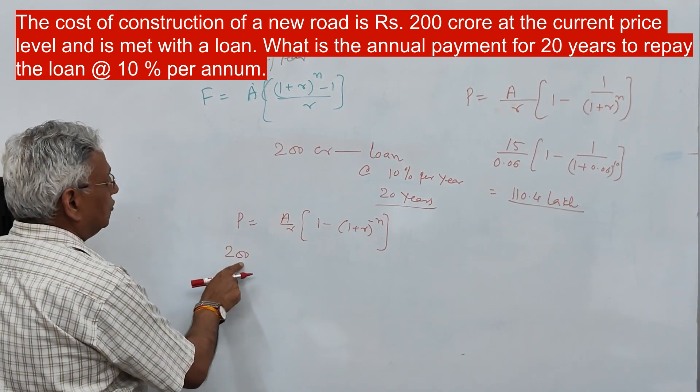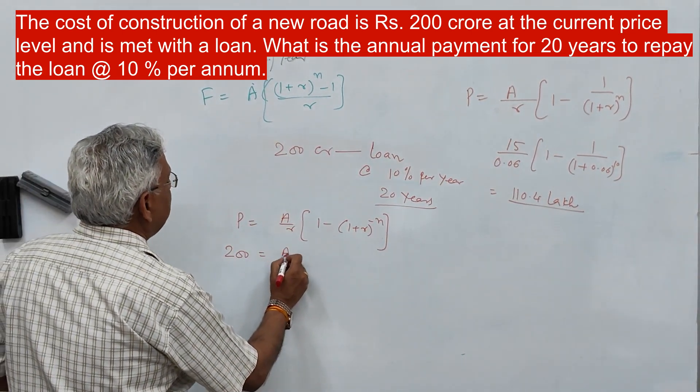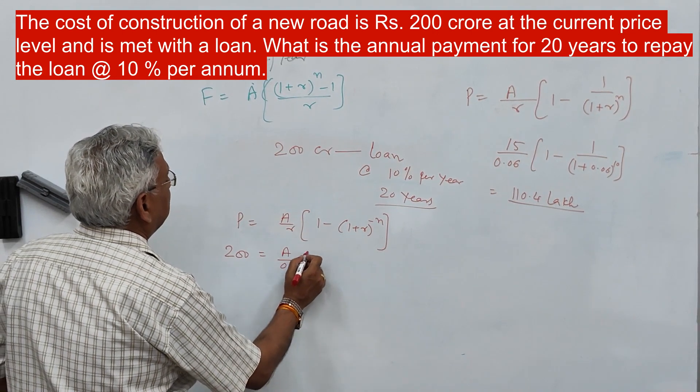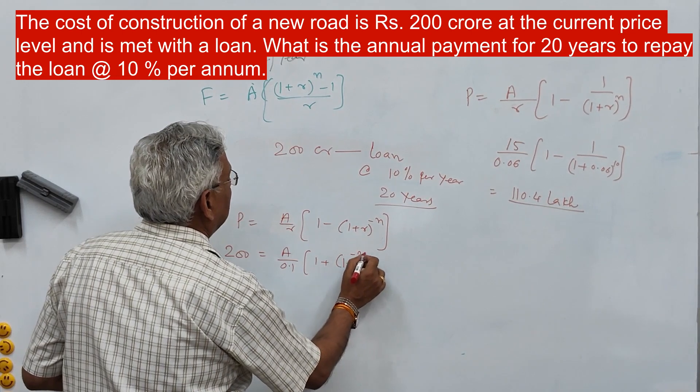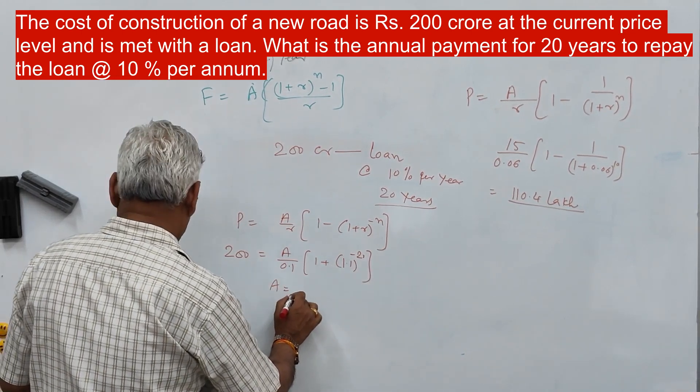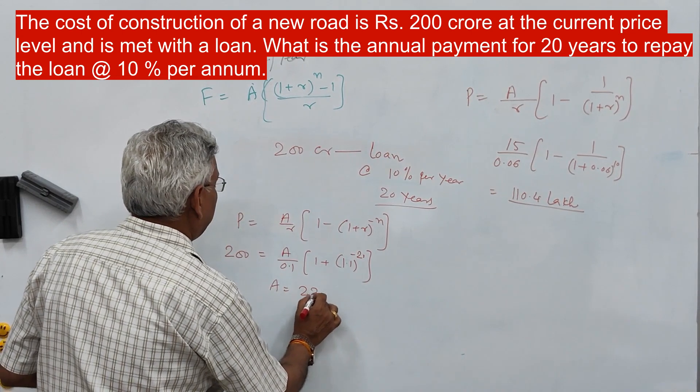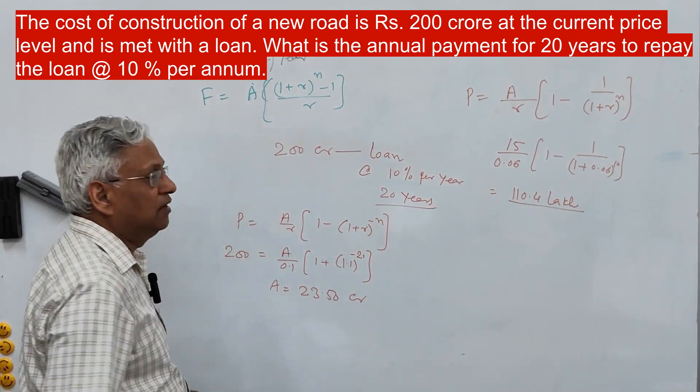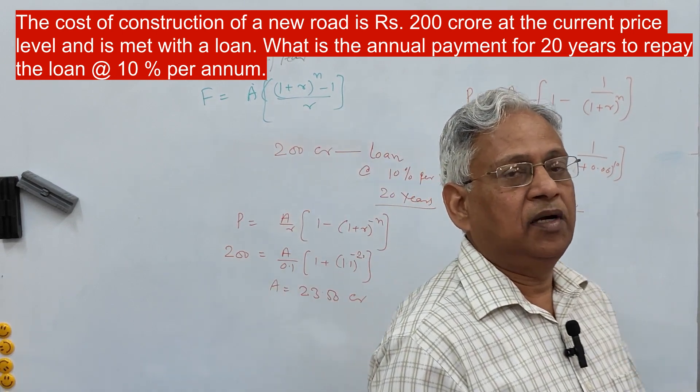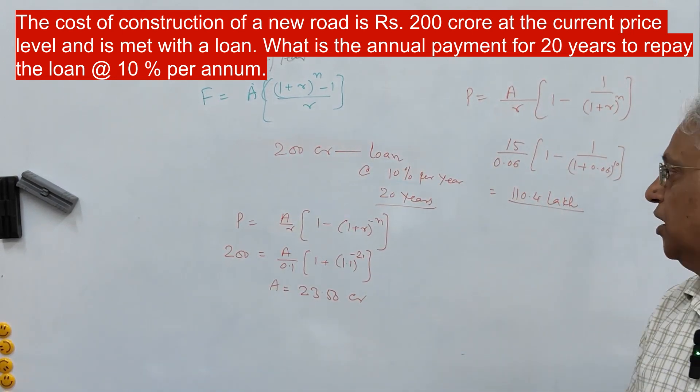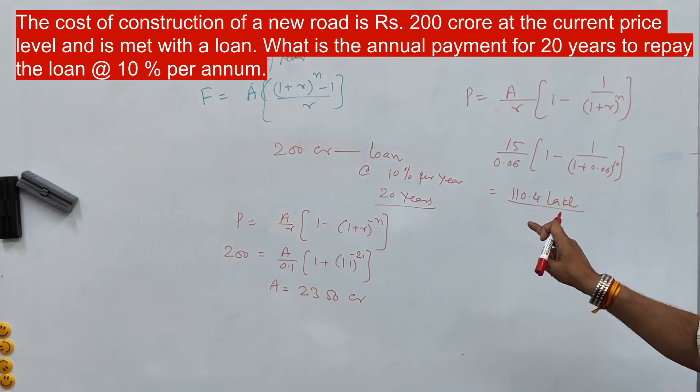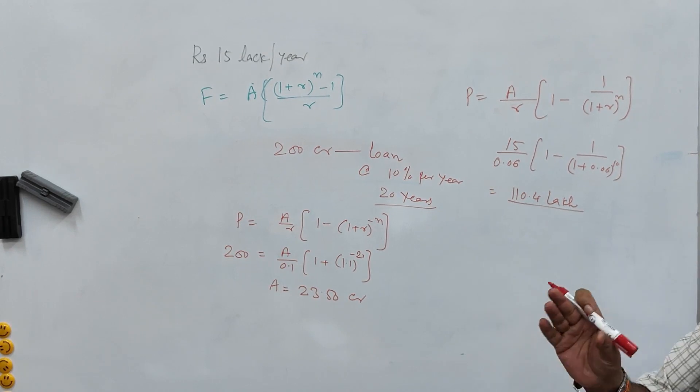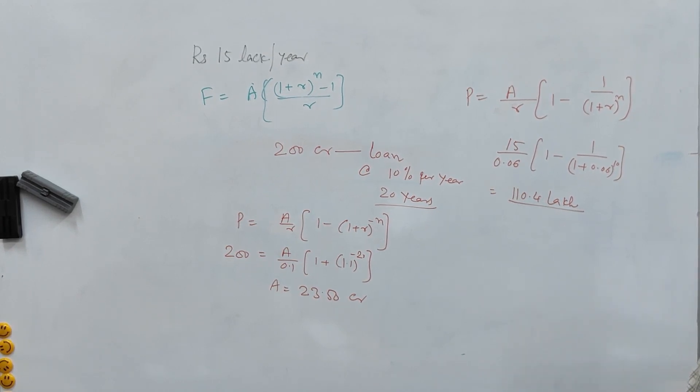Now you have to find the value of A. P is 200 crore. What is A at the rate of 10%? Solving this, A is 23.5 crore. Every year you have to pay to the bank 23.5 crore against a loan of 200 crore taken at the interest rate of 10% for 20 years. That is the time value of money, a very important concept in economic evaluation of highway projects.